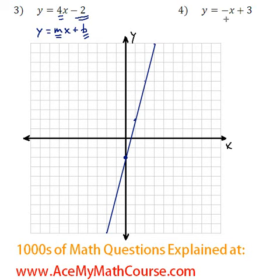Question 4, y equals negative x plus 3. So here the slope is negative 1, there's a hidden 1 over here, right? Plus 3. So the y-intercept is 3. So from the origin, we go 3 units up, right there.